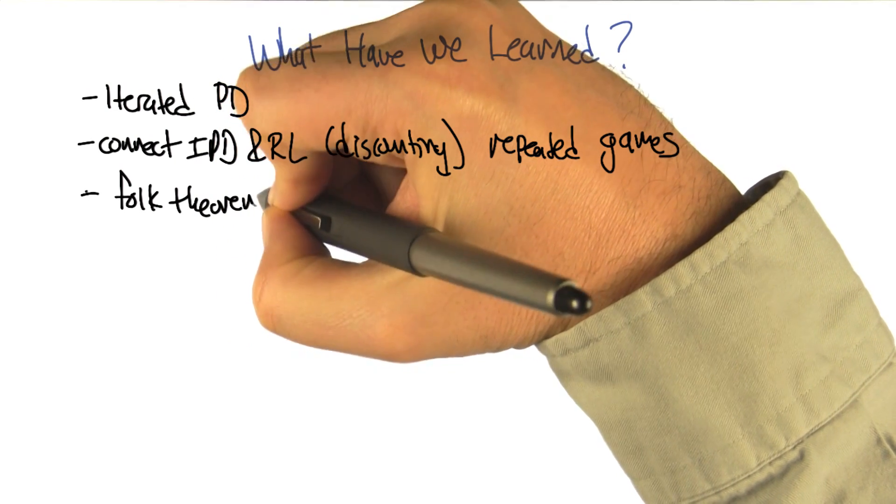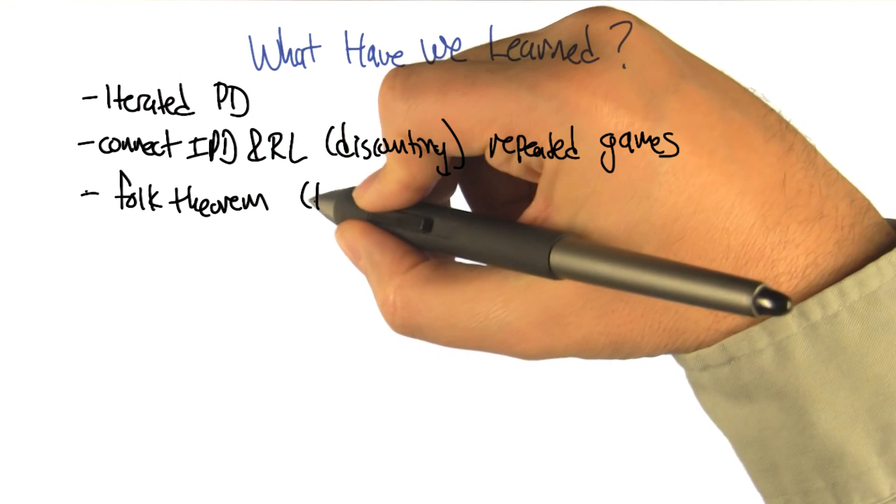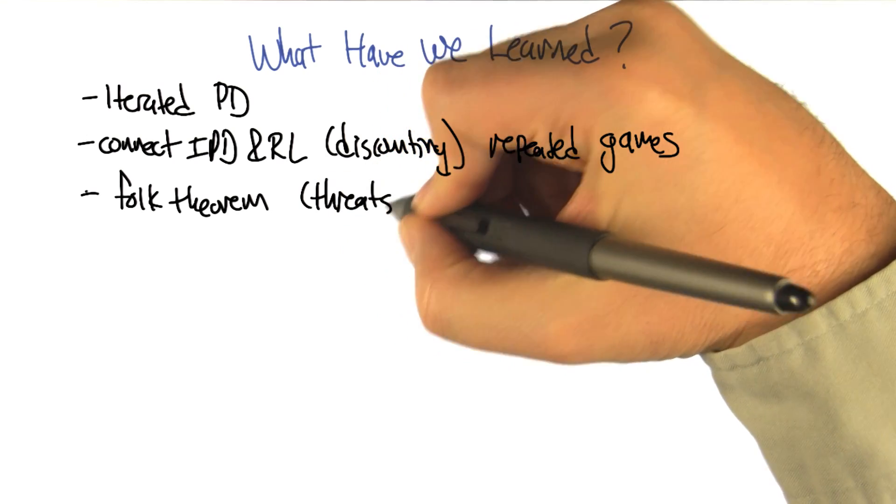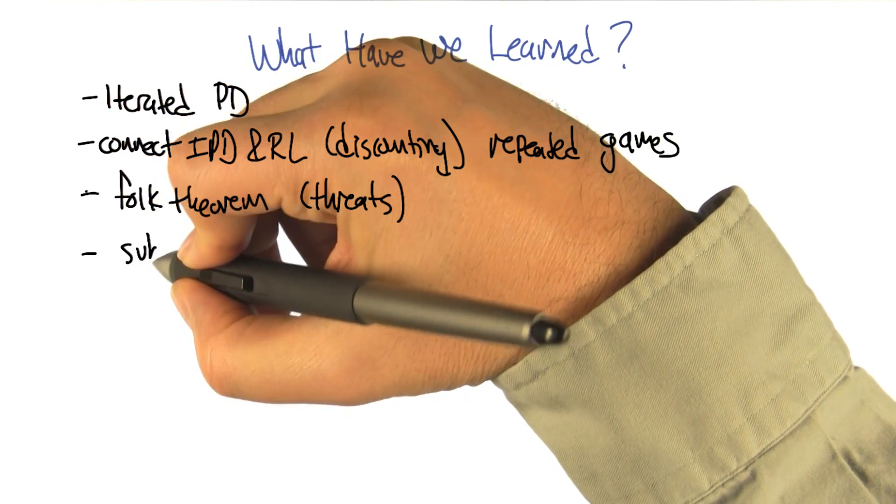Right, the folk theorem. So the folk theorem was really cool. And this whole notion of repeated games really seems like a clever way of getting out of what appeared to be limitations in game theory. Right. Yeah. In particular by using things like threats. Right. But only plausible threats.